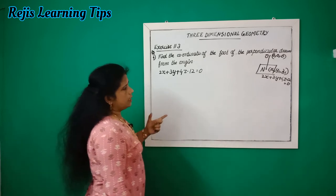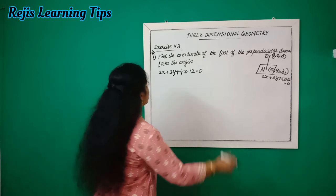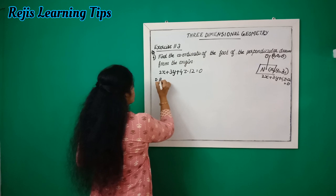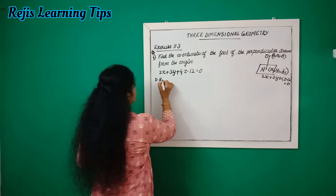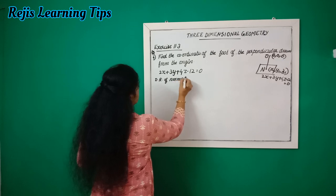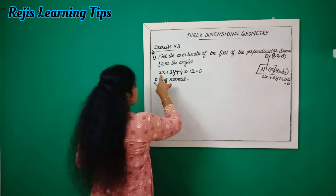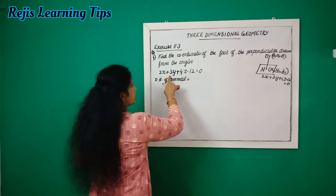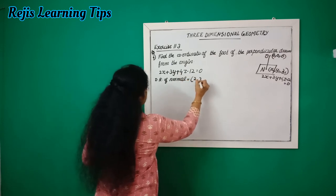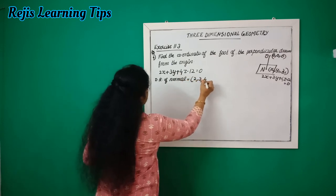First, we find the directional ratios of the normal to the plane. The directional ratios of the normal are 2, 3, 4.